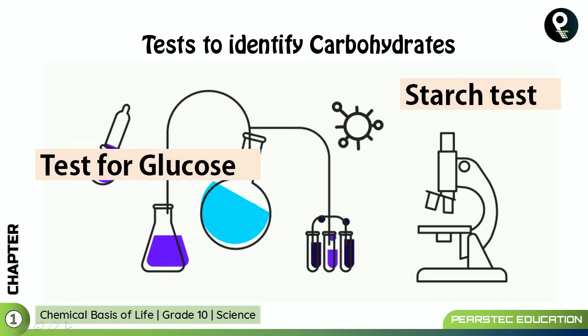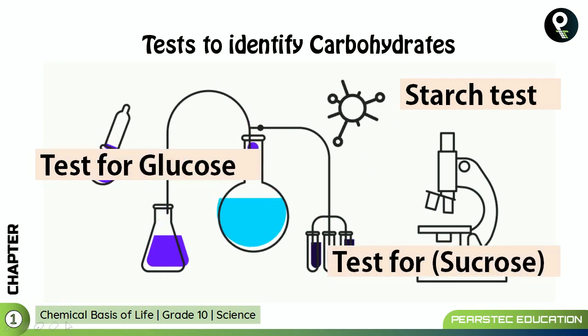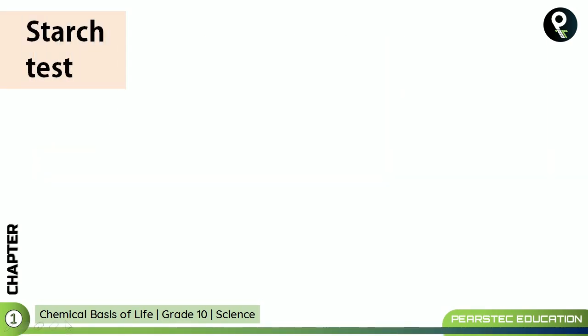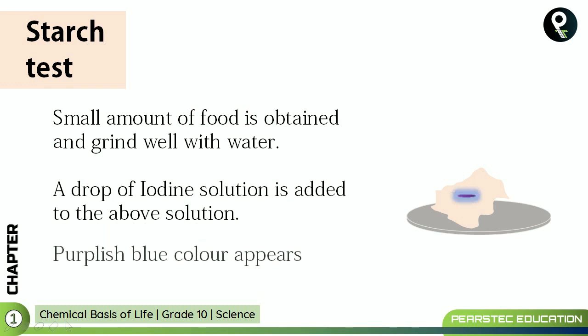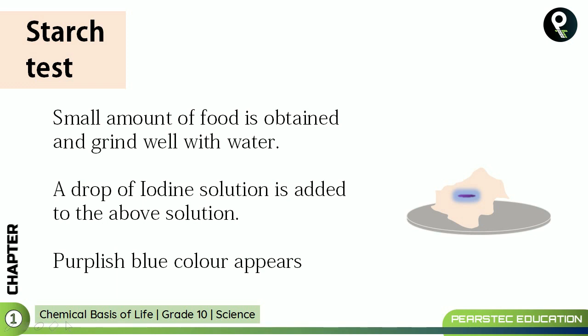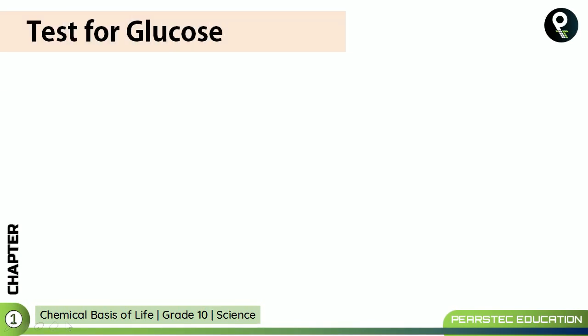Now let's do some tests to identify carbohydrates. We will learn about a starch test, a test for glucose, and a test for sucrose. Starch test: a small amount of food is obtained and ground well with water. Then a drop of iodine solution is added to the above solution. A purplish-blue color appears when starch is present. You can do this at home — mix a small amount of food with water, add a drop of iodine solution, and if it turns purplish-blue, starch is confirmed.